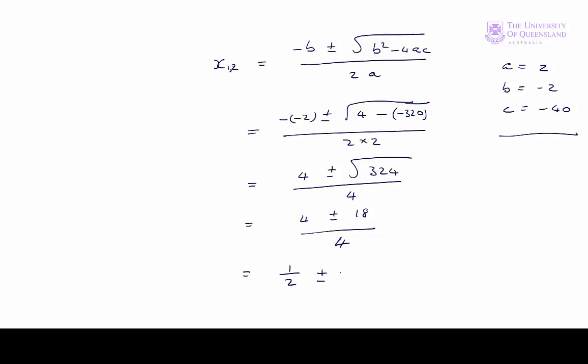So that's a half plus or minus 9 over 2. We'll have x1 equals a half minus 9 over 2, that's minus 4. x2 will be a half plus 9 over 2, which is plus 5.